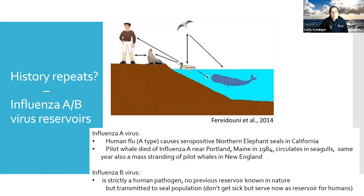Another example is influenza B virus, which has strictly been a human pathogen with no previously known reservoir recognized in nature. However, more recently it seems that influenza type B has been transmitted to seal populations, which, while not dying from influenza B infection, could therefore very likely become an active reservoir for human infection.